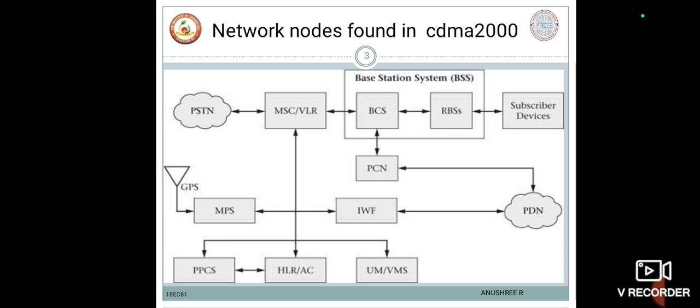The Base Station Subsystem provides a mobile subscriber with an interface to the circuit-switched core network through the MSC and an interface to the public data network through the packet core network. In the CDMA 2000 system, the Base Station Controller provides the following functionality: it is the interface between the MSC, the packet core network, other BSS in the same system, and all the radio base stations that it controls.